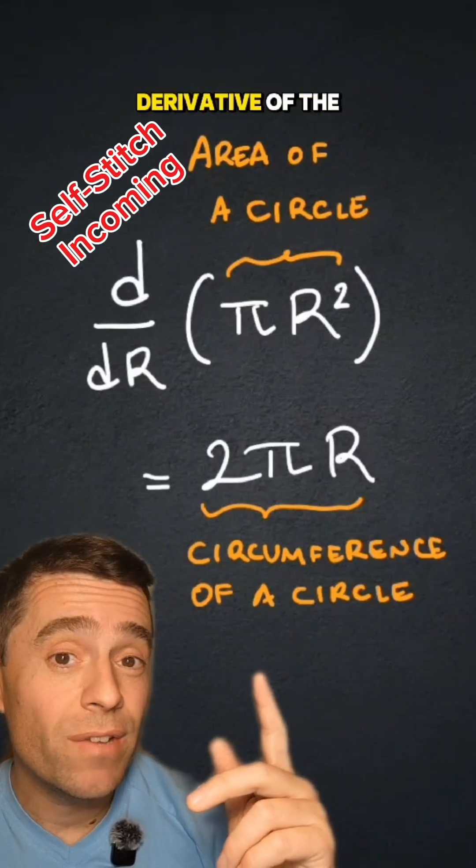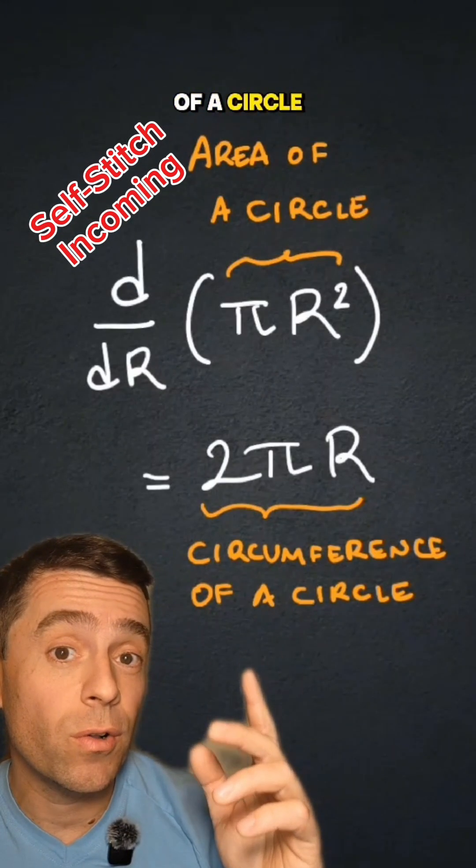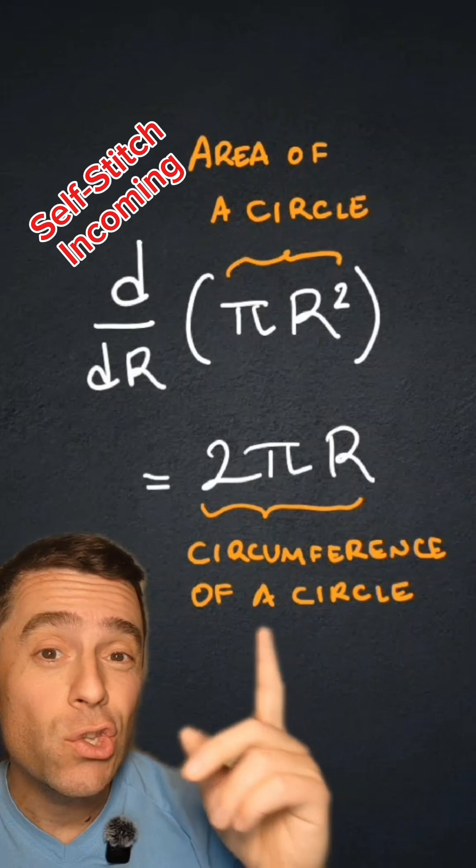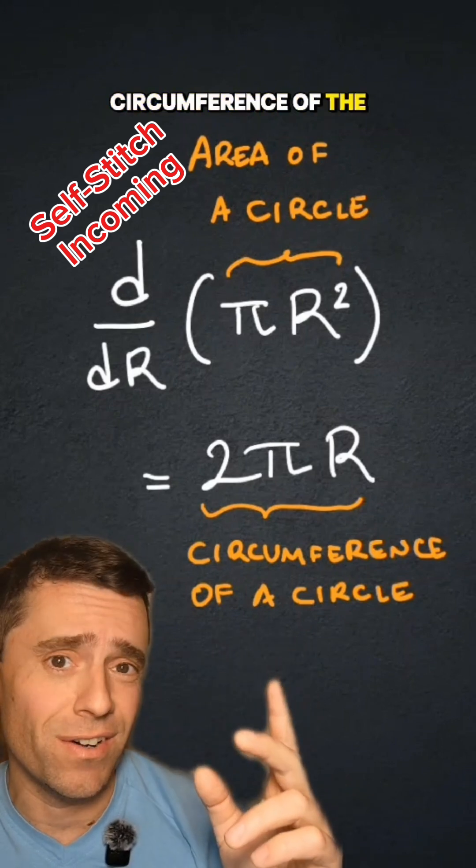Have you ever noticed that if you take the derivative of the formula for the area of a circle with respect to the radius, you get the formula for the circumference of the circle?